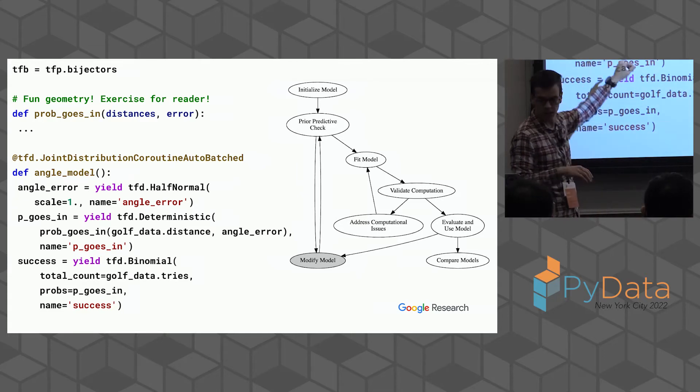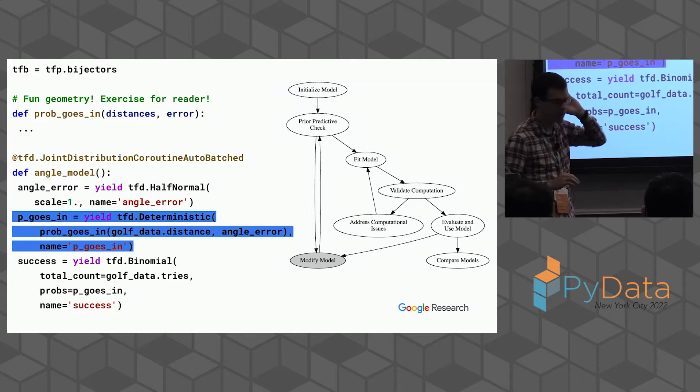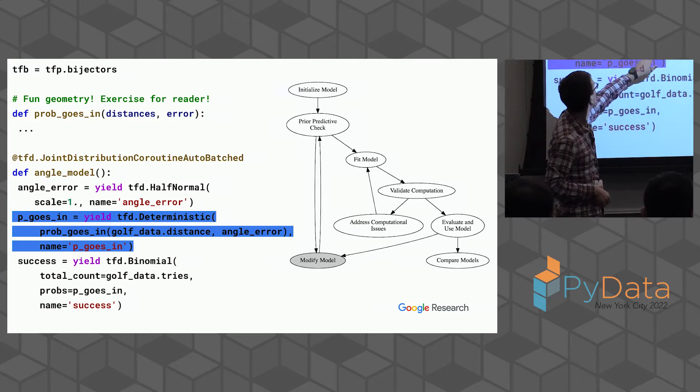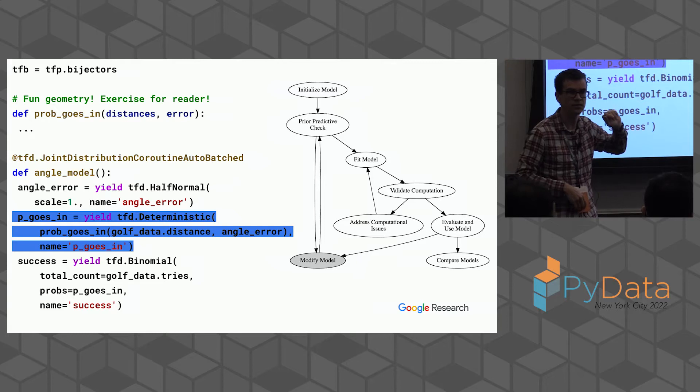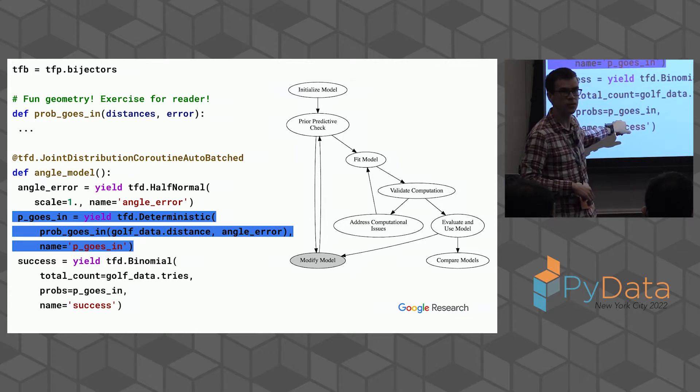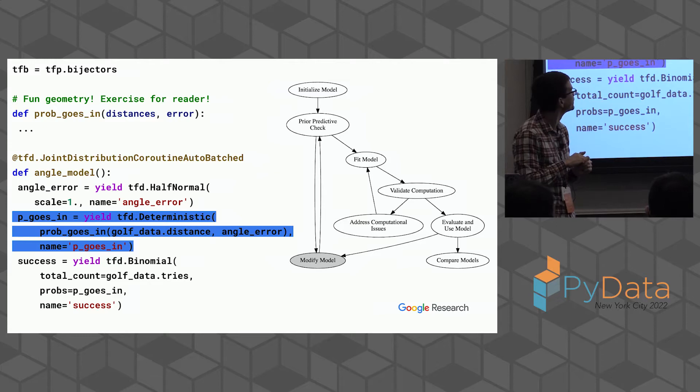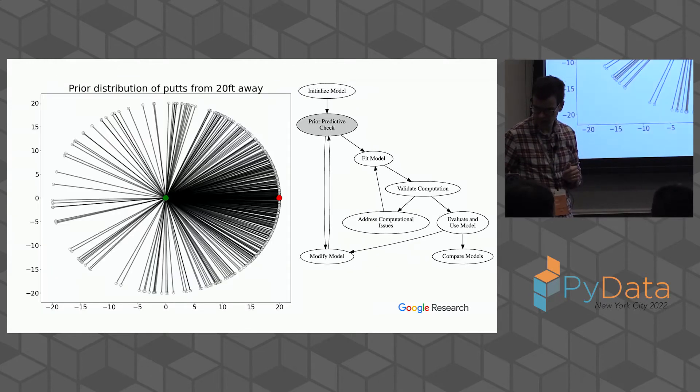You can write the probability that goes in given the error in your aiming and given how far away you are. Once we have that function, we can go and plug that back into a probabilistic model. We now have just a one parameter model, but then I'm adding a deterministic node here. That's the probability that goes in and I'm passing in our angle error to that along with the actual distances from our data set.